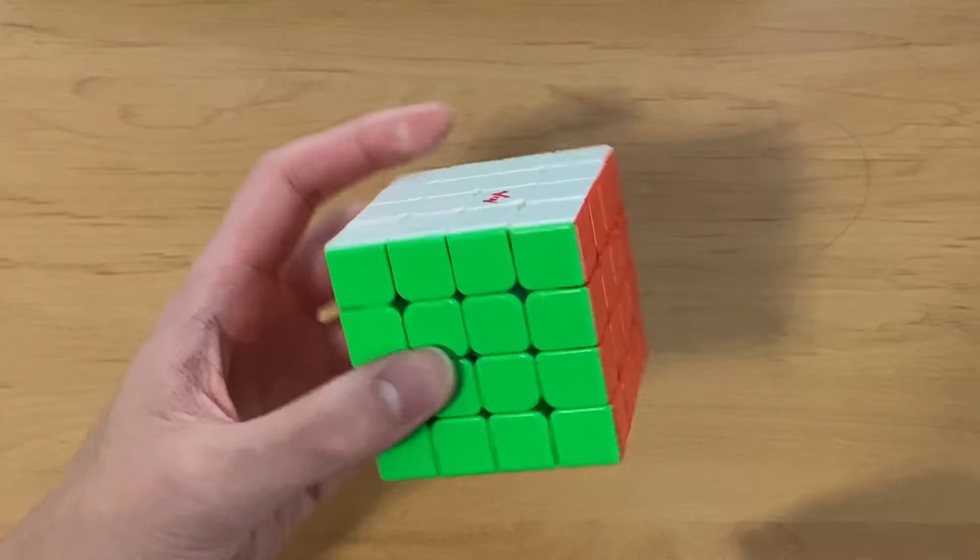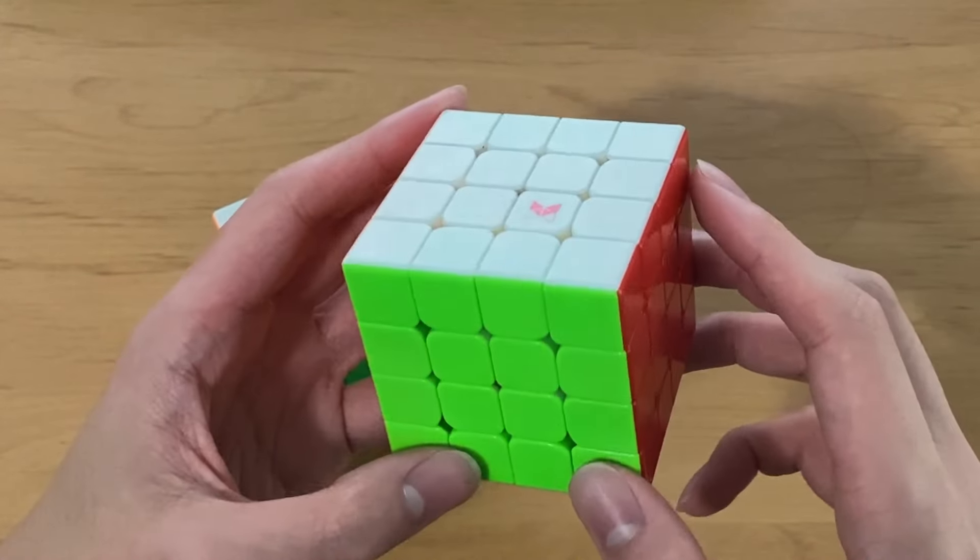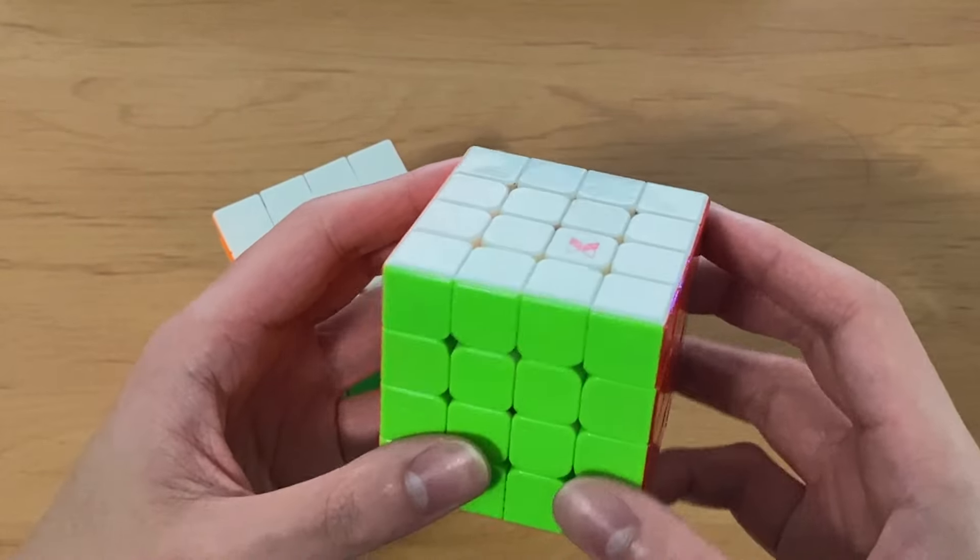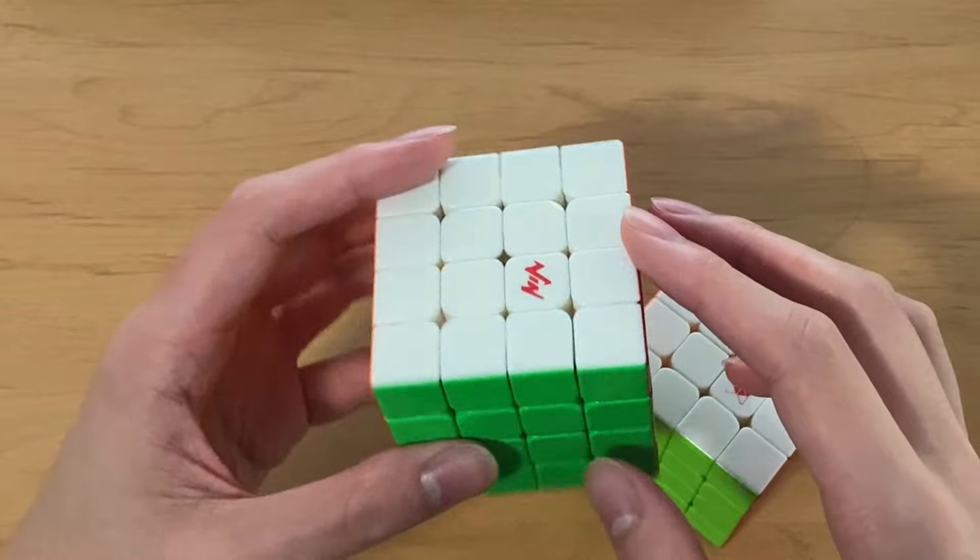Before I got the VIN 4x4, I used to use the X-Men Ambition. It's not a very popular choice because the corner cutting isn't super good, but I've broken mine in enough to where it has very good performance, and honestly it is pretty decent. However, I find that the VIN is better.